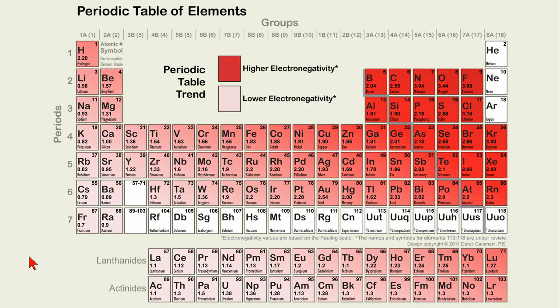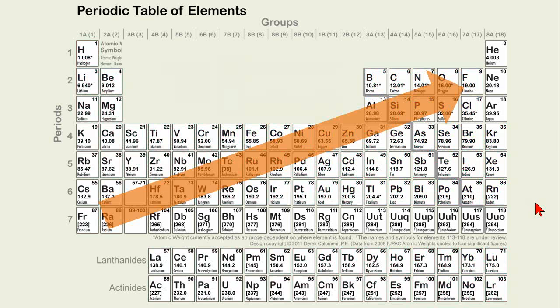If we take a blank periodic table and draw an arrow, we can visually see how electronegativity increases from the bottom left to the upper right. The bottom left values hover around 0.7 and go as high as four for fluorine.